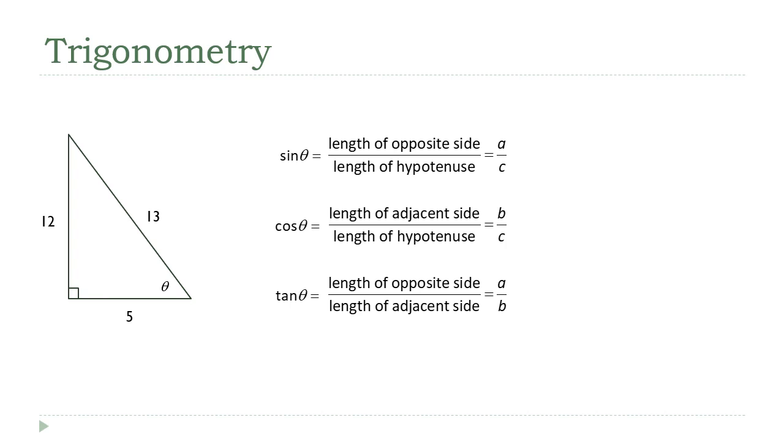So I'm working with the same angle down here, theta. And what I want to know is what is the sine of theta? Well, that's the opposite side divided by the hypotenuse. The opposite side's length is 12 and the hypotenuse is 13. So that's the sine of that angle.